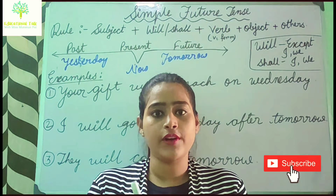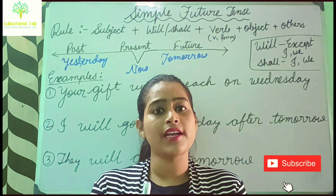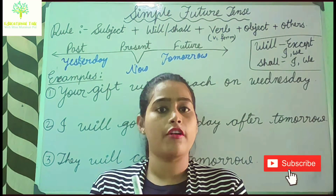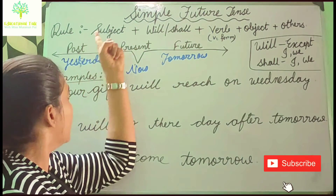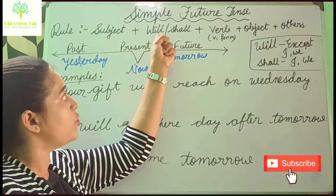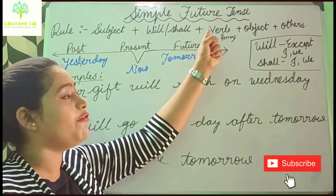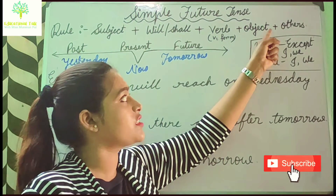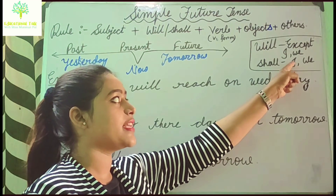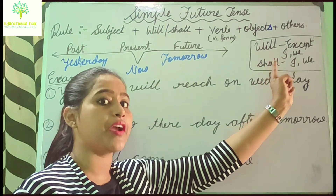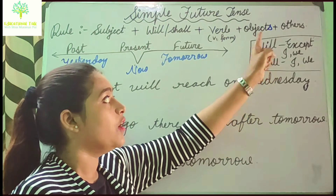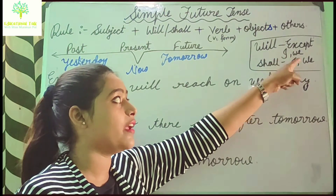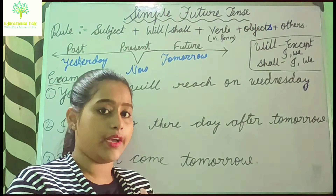Now I am showing the rule. The rule is: Subject + will or shall + verb V1 form + object + others. Remember, we use the V1 form, which is the present form. When the subject is 'I' or 'we', you can use 'shall'. When the subject is not 'I' or 'we' — meaning except 'I' and 'we' — you use 'will'.